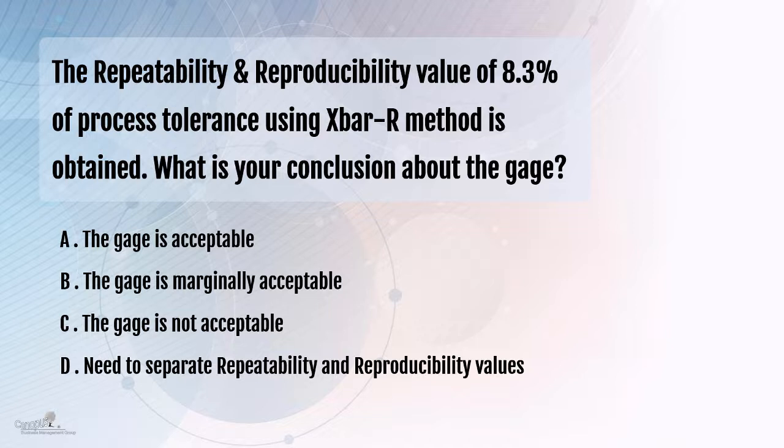Coming specifically to answer this question, the options that we have are: is the gauge acceptable? Is it marginally acceptable? Is it not acceptable? And we need to split the repeatability and reproducibility values before we even comment about whether the gauge is acceptable or not. What do we mean by 8.3% of process tolerance? The variation in the process because of the gauge — that is, the repeatability and reproducibility-related variation — is 8.3% of the total process tolerance.